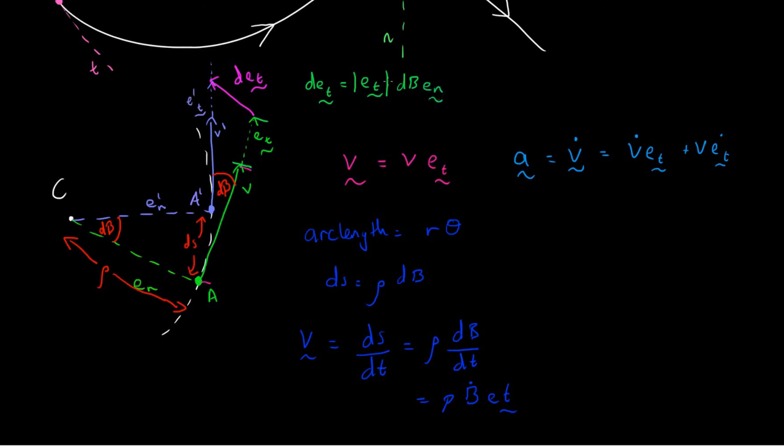What is the magnitude of any unit vector? That is 1. And I'm going to take the time derivative, so I can say that e_t vector dot is equal to beta dot e_n. So now I'm going to substitute this in for this term over here.